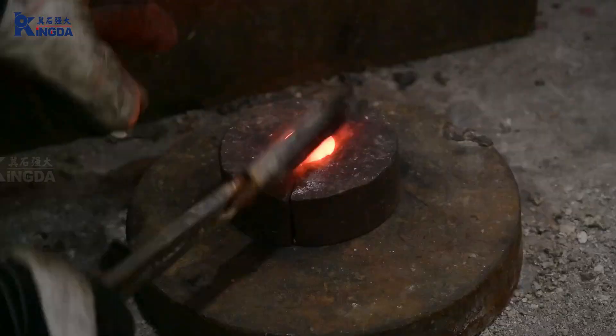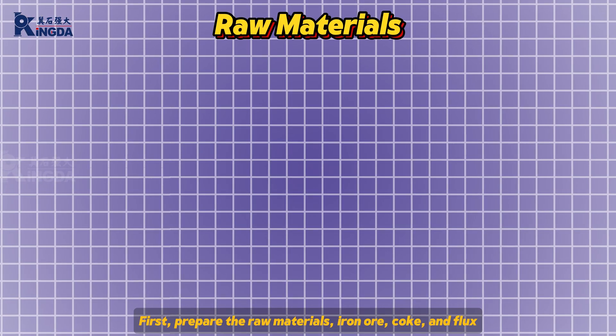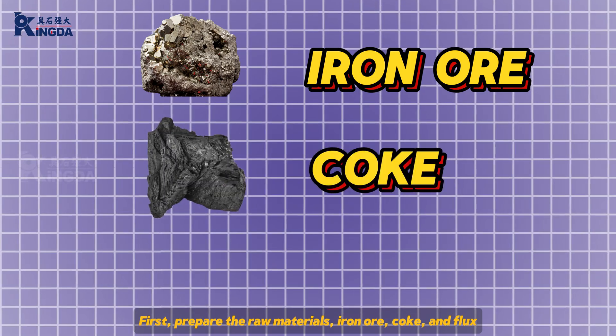How is steel made? First, prepare the raw materials: iron ore, coke, and flux.